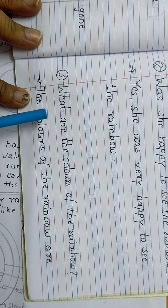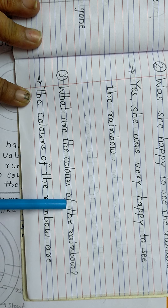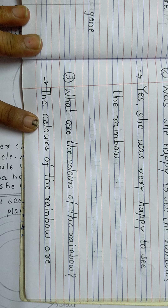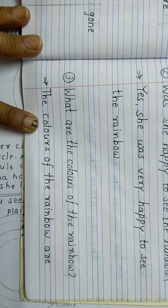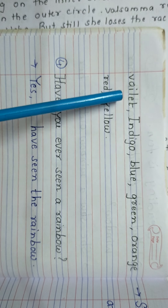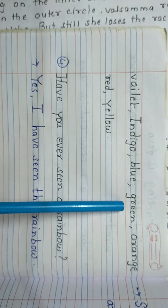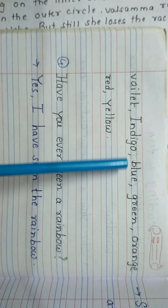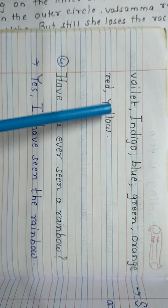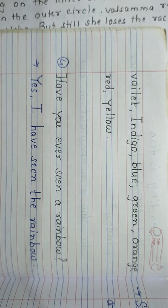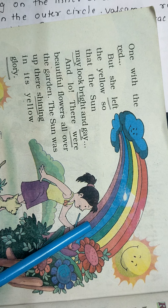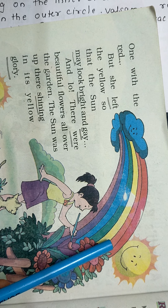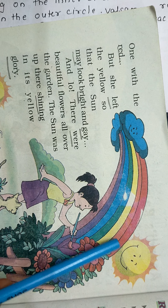Next question: What are the colors of the rainbow? There are seven colors in the rainbow. The colors are violet, indigo, blue, green, orange, red, and yellow. Let's see them in the picture — violet, indigo, blue, green, orange, yellow, and red. These are all the colors of the rainbow.